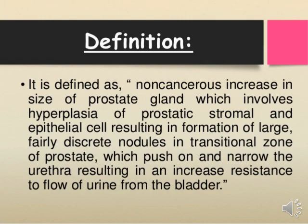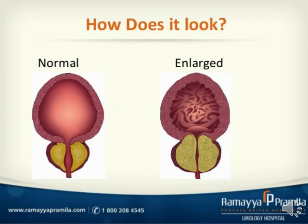Now let's see how it looks. There are two diagrams here: one is the normal prostate gland diagram and one is the enlarged prostate gland. This enlarged condition of the prostate gland corresponds to the BPH period.